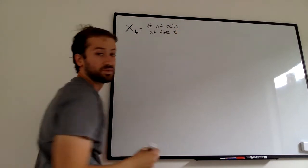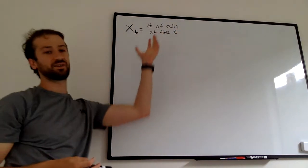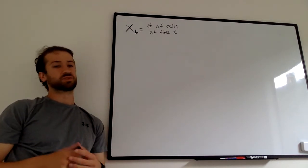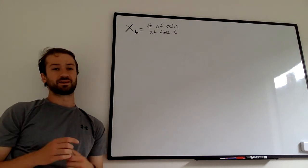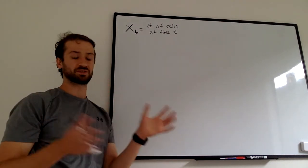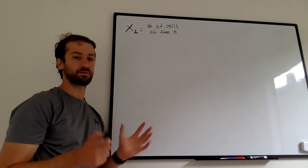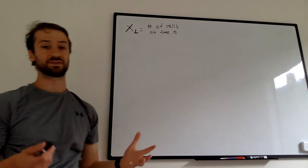We're going to define x sub t as the number of cells at time t. I'm just using cells because cells subdivide and do that a bunch. You could also say amoebas, a bug population - it's some population that branches or divides, but I'm just going to say cells because it's easy to use. You can use any noun you really want.